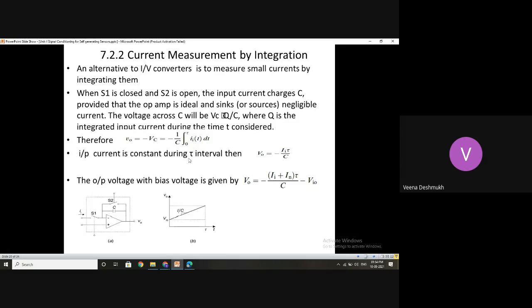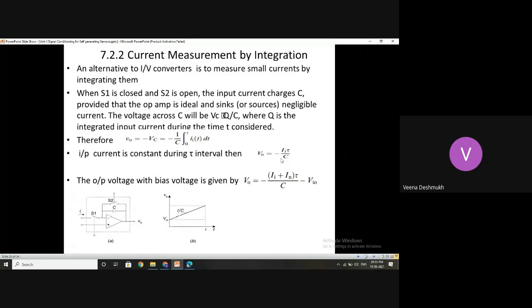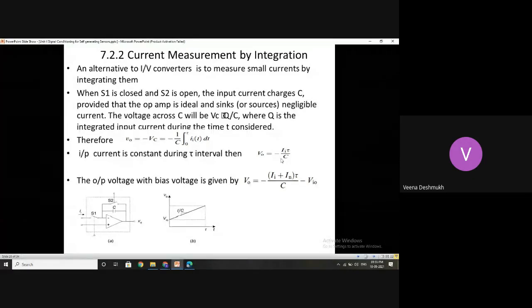Similar technique is employed here. So the input current is constant during T interval. Then what will happen if the current is constant? If the current is changing, then your integration works over the interval T if it is changing. If it is constant, what will happen over T? Then II divided by C into whatever is the interval, this gives you the voltage developed here. So this current is converted to its voltage equivalent using the integration method.